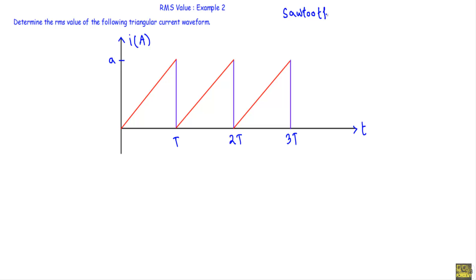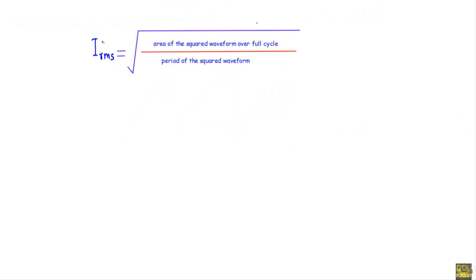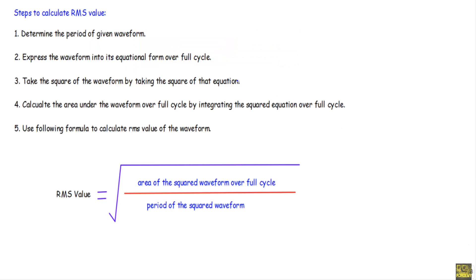We have to calculate the RMS value of this sawtooth or triangular current wave. To calculate the RMS value of the current we use this formula: root over the area of the squared waveform over the full cycle, divided by the period of the squared waveform. To find these two quantities I will follow five steps.